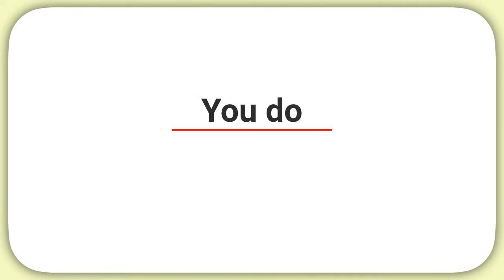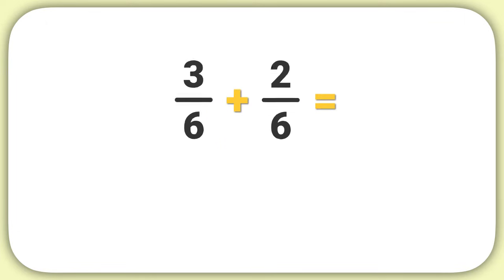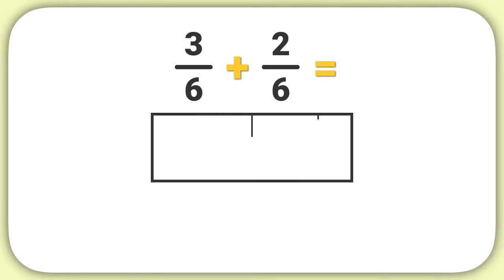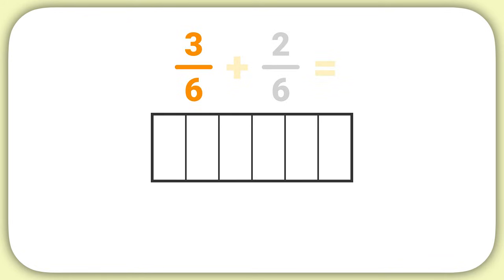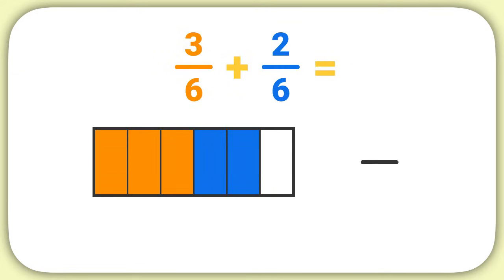Now it's time for you to practice on your own. What is three-sixths plus two-sixths equal? Well, you would start by drawing a model. Your model should have started with three-sixths shaded. Then you should have added two more sixths.